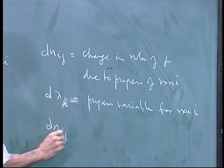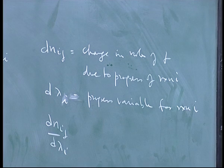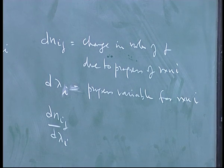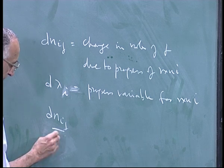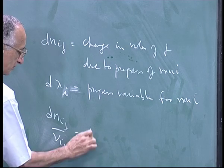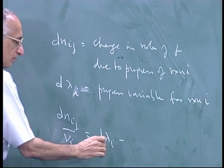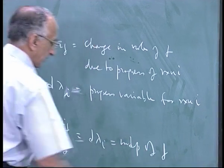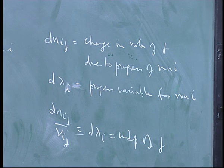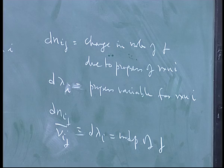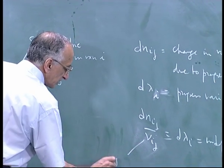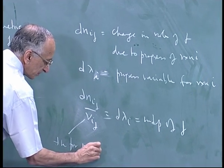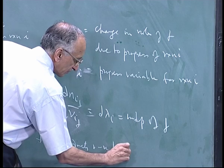For each reaction I, the change in the number of moles of J is proportional to its stoichiometric number. By convention, the stoichiometric coefficients are positive for products and negative for reactants.